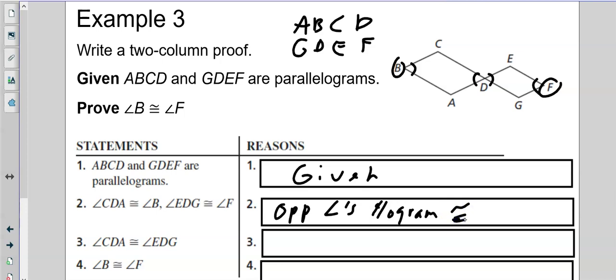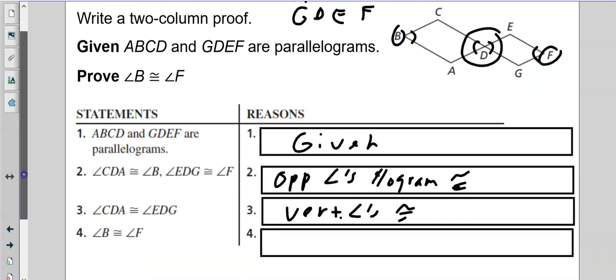All right? Now, we know CDA and EDG are congruent to each other, and we know that because vertical angles are congruent. Now, looking back at number two, if we know this is equal to this, and this is equal to this, and we've just said that these two are equal, then by the transitive property, we know B and F are equal. It's kind of like the, if you're friends with person two, and person two is friends with person three, I'm going to be friends with person three most likely. Transitive property.